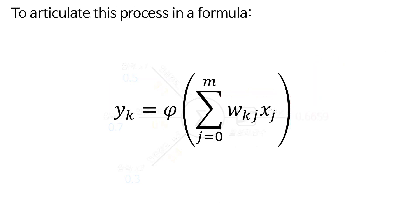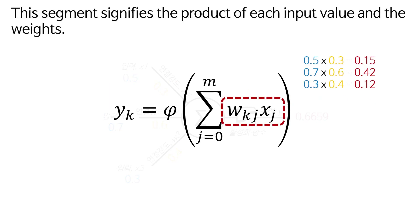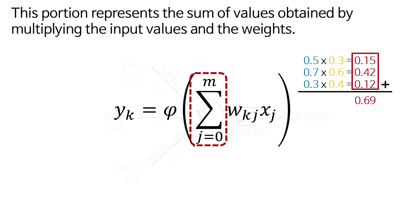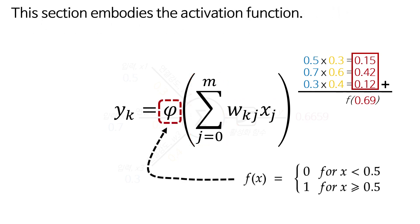To articulate this process in a formula, this segment signifies the product of each input value and the weights. This portion represents the sum of values obtained by multiplying the input values and the weights. This section embodies the activation function.